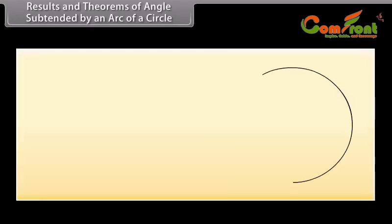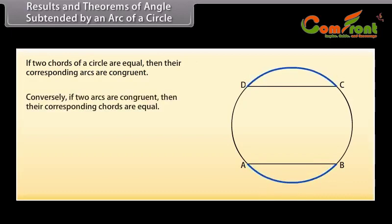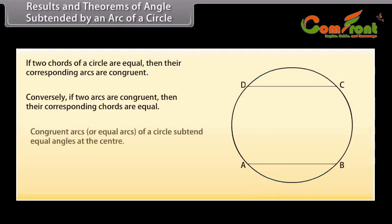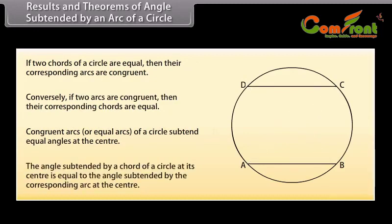Results and theorems of angles subtended by an arc of a circle. If two chords of a circle are equal, then their corresponding arcs are congruent. Conversely, if two arcs are congruent, then their corresponding chords are equal. The second result states that congruent arcs of a circle subtend equal angles at the center. That means the angle subtended by a chord of a circle at its center is equal to the angle subtended by the corresponding arc at the center.